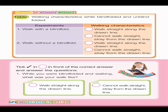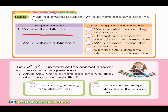Table: Record of Activity Result. Walking characteristics while blindfolded and unblindfolded. Let's do these experiments. Walk with a blindfold — what are the characteristics? Cannot walk straight along the drawn line.